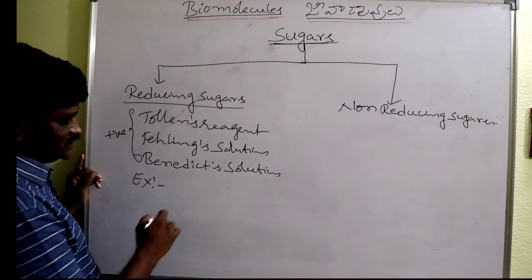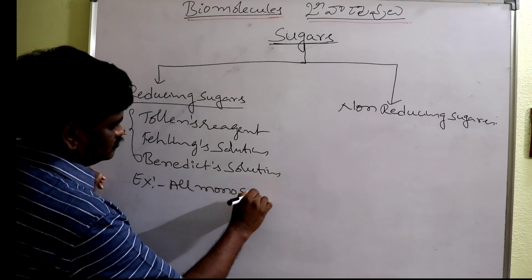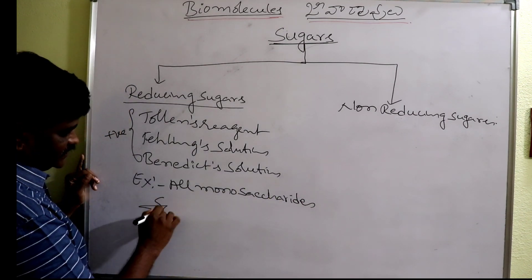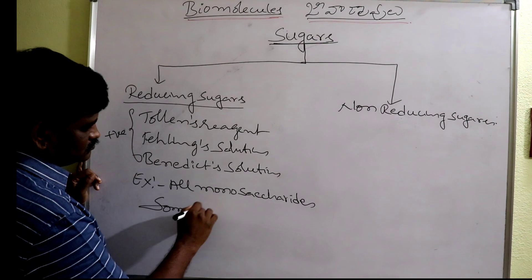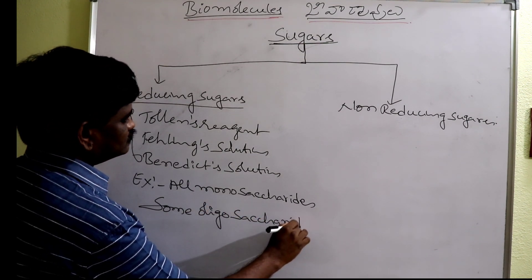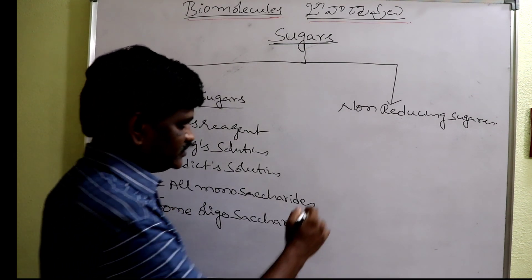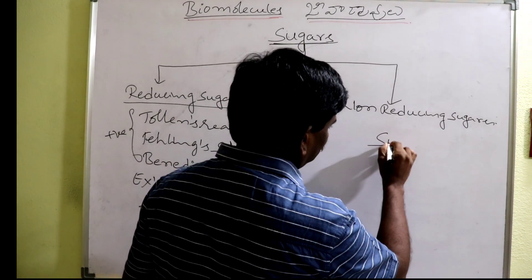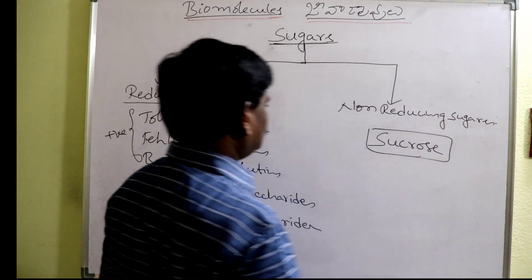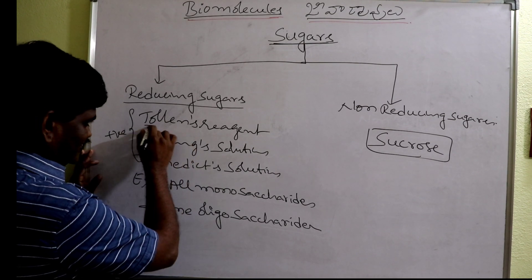Reducing sugars include all monosaccharides, some oligosaccharides, and also some oligosaccharides — except sucrose. Very very important: sucrose is a non-reducing sugar.